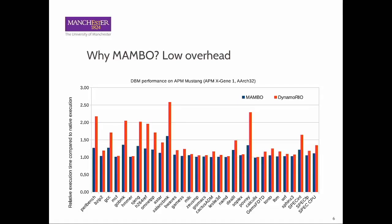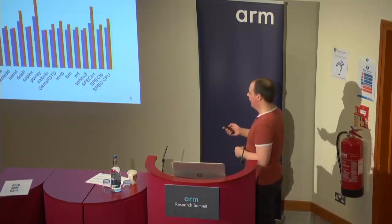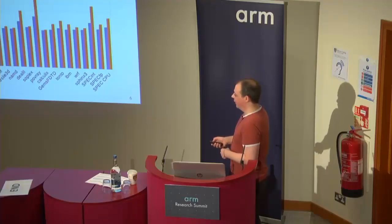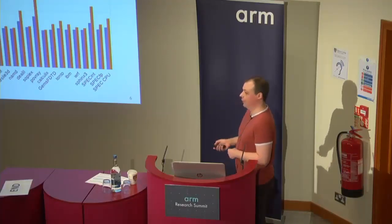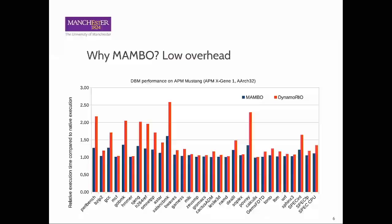On this chart I am showing relative execution time compared to native execution on the vertical axis — essentially how much slower it is to run an application under a Dynamic Binary Modification System compared to running it directly. A value of 1 means there is no overhead, and lower values are better. This is SpecCPU 2006 compiled for 32-bit. I am showing results for Mambo and DynamoRIO, which is the second fastest Dynamic Binary Implementation that works on ARM. For every single benchmark, we get lower overheads with Mambo. In some cases the difference can be quite significant — for example, Xalancbmk has a lot of function calls and returns, which tend to add a lot of overhead to Dynamic Binary Modification. Here Mambo has around 60% overhead while DynamoRIO has around 160%.